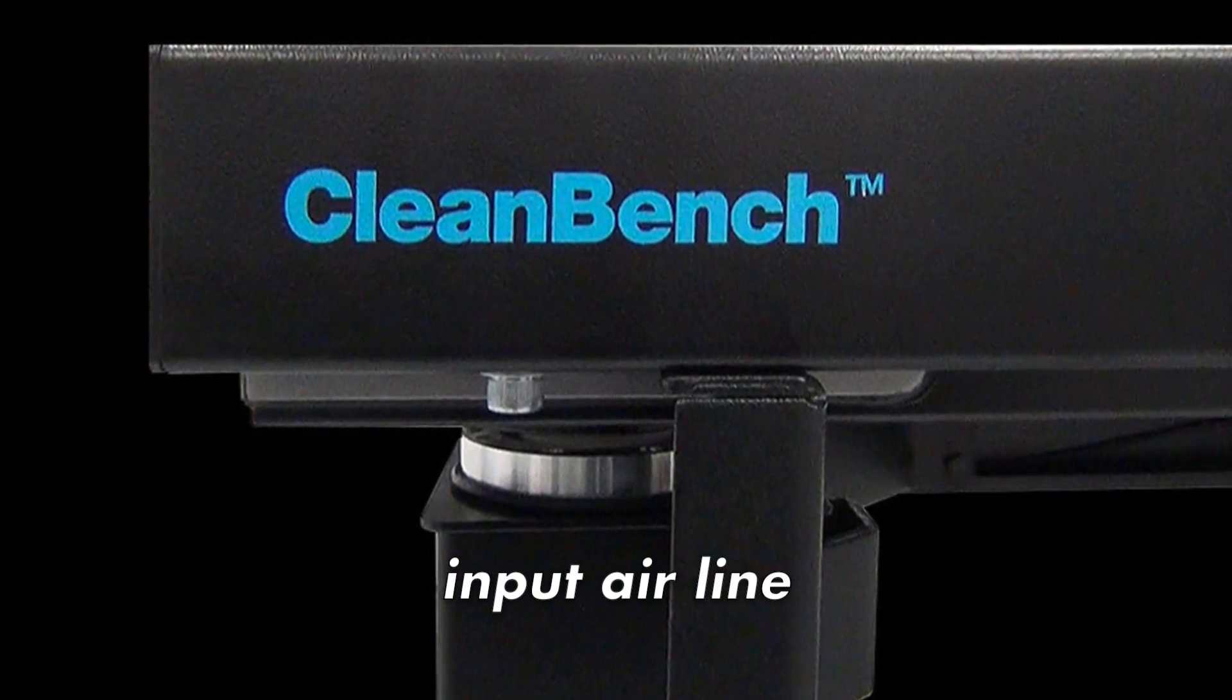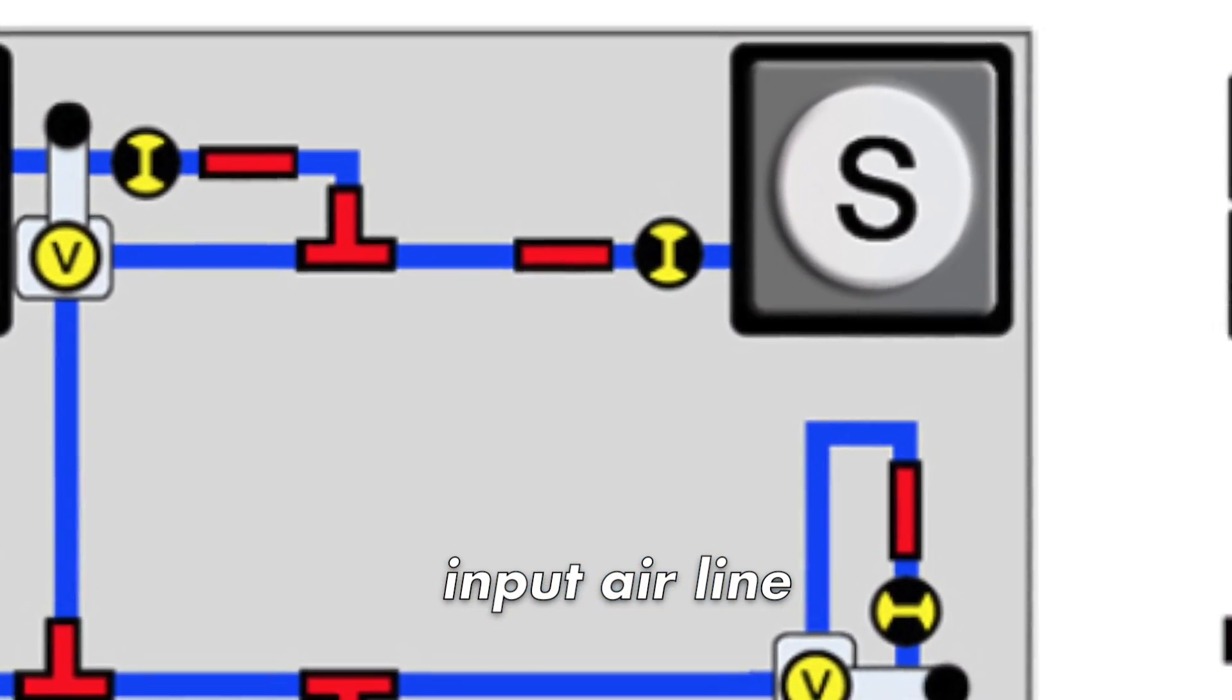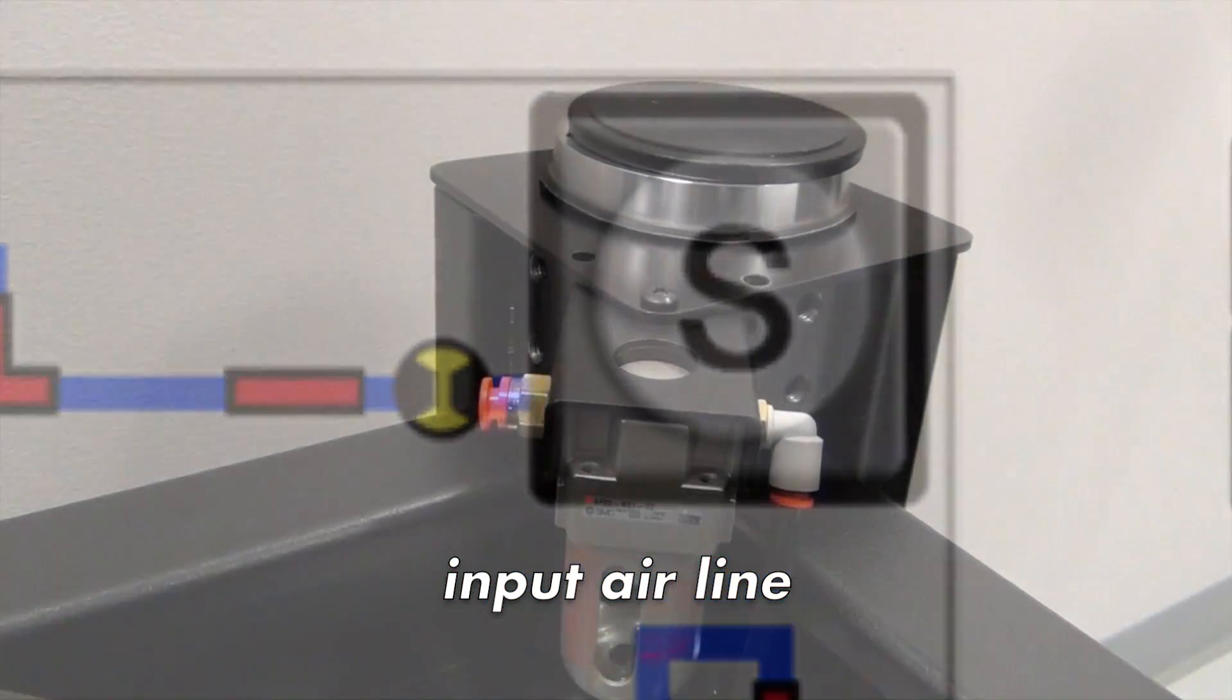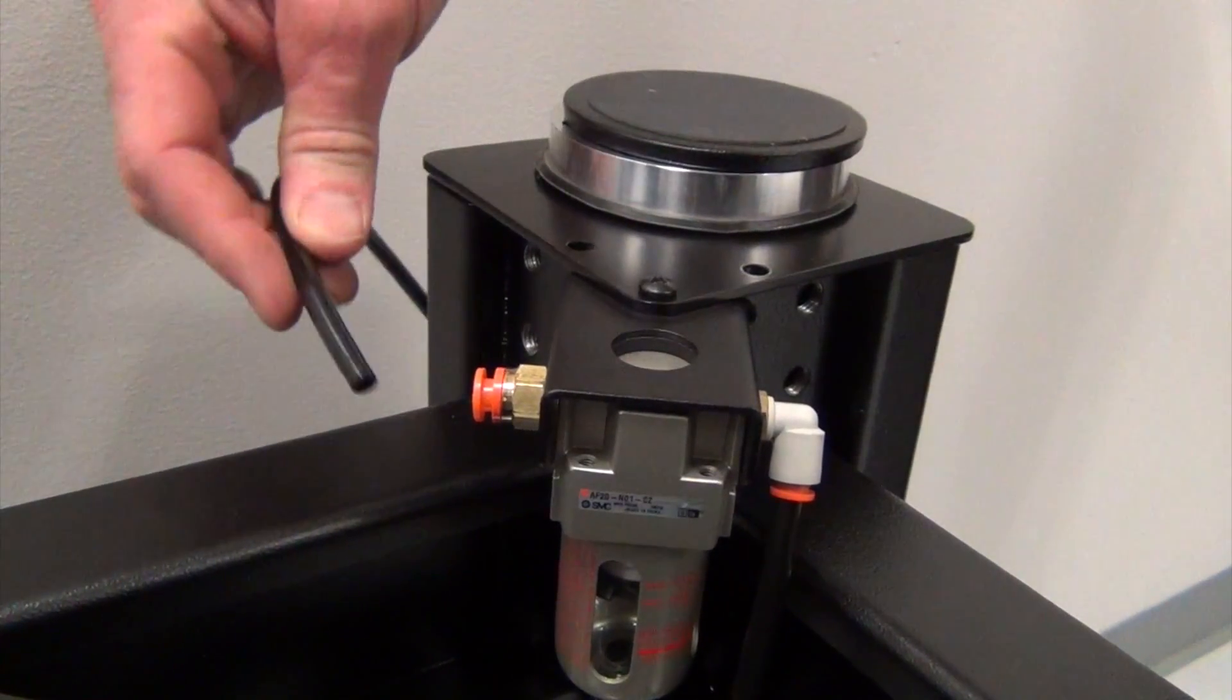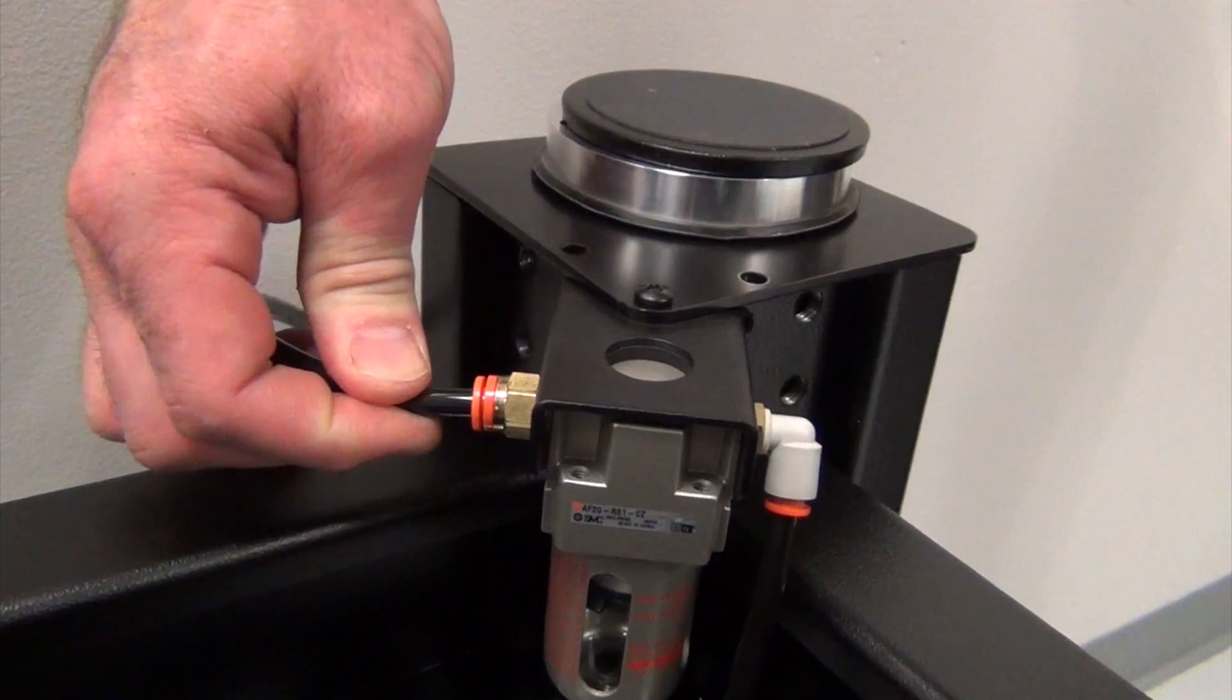The input air line can now be run to the press lock fitting on the filter located on the back right leg. To install the tubing into the fitting, press the tubing into the orange ring until it stops.